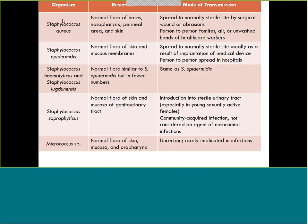Staph aureus is found as normal flora in the nares, nasopharynx, perineal area, and a little bit of skin. For mode of transmission, it can be introduced by a surgical instrument that wasn't cleansed well enough, fomites like countertops and doorknobs, through the air, or through unwashed hands of healthcare workers. There are so many ways staph aureus can be passed — there are a ton of modes of transmission.